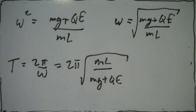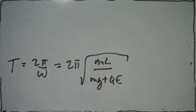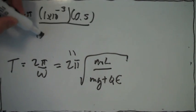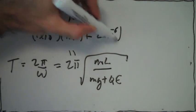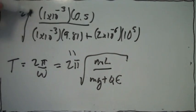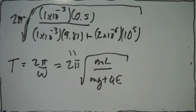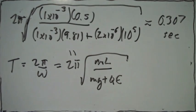The problem gives us the mass, the length of the string, the charge, and the electric field. So we plug these numbers in. The mass is 1×10⁻³, the length is 0.5. We plug in the numbers in the denominator too and calculate — taking the square root. This gives us 0.307 seconds. So that's the period of oscillation.